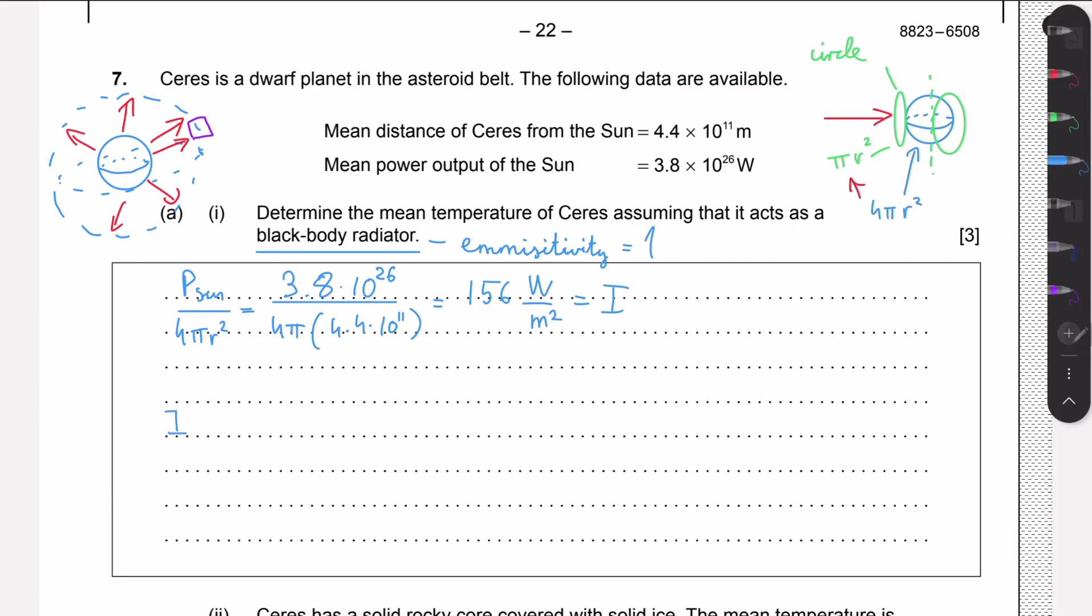We're going to need to divide this intensity by 4. So i over 4 is equal to 156 divided by 4, which equals 39 watts per square meter. This is the only power that's going to be increasing the temperature of Ceres at a given moment. This is what we need to calculate with.